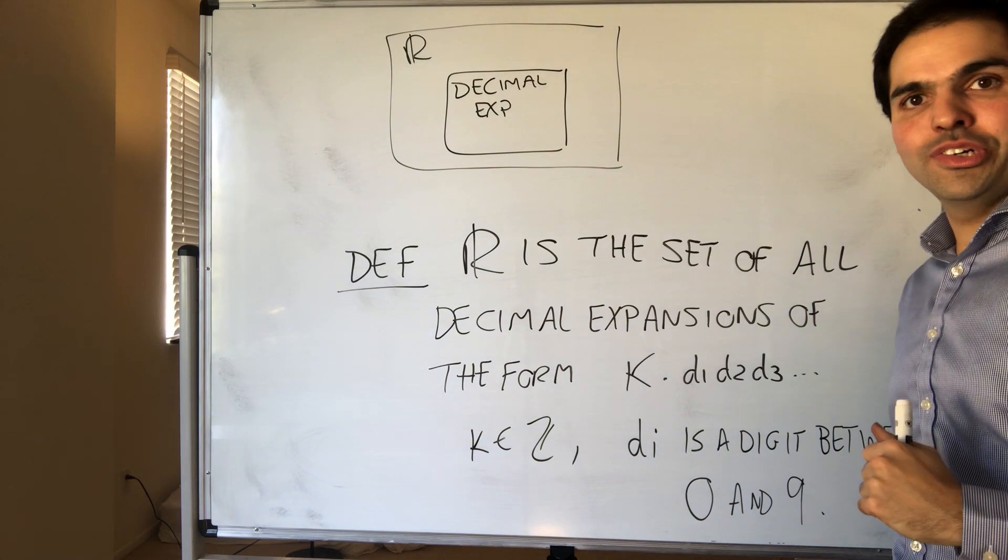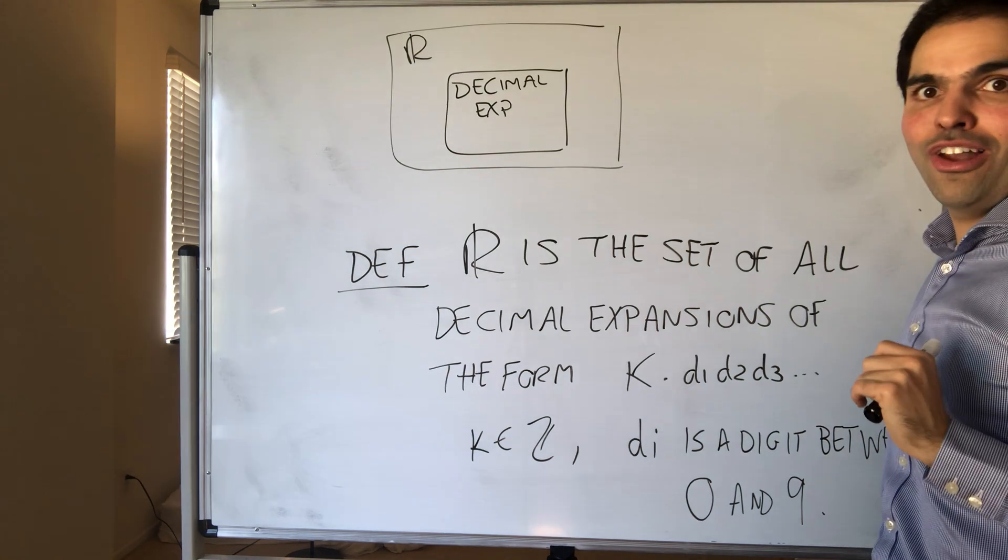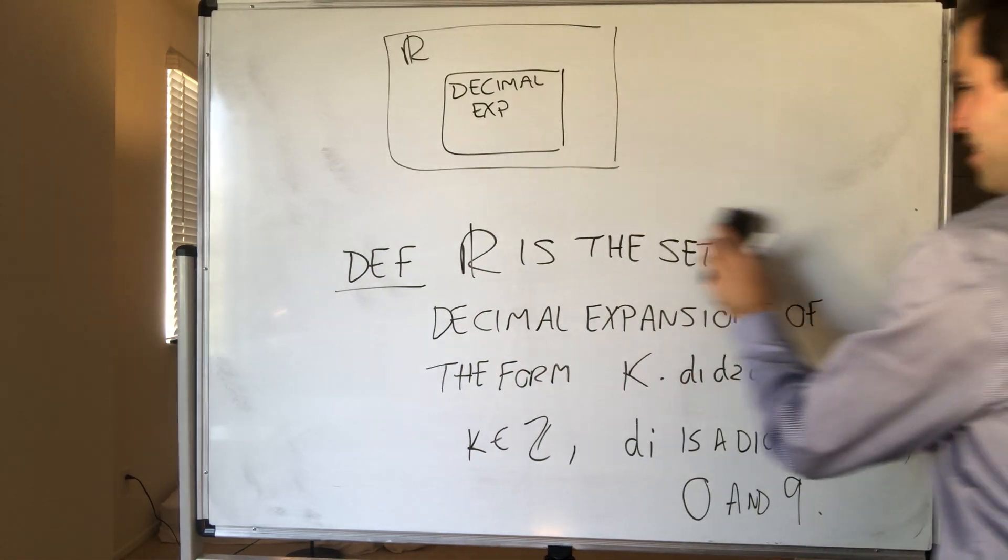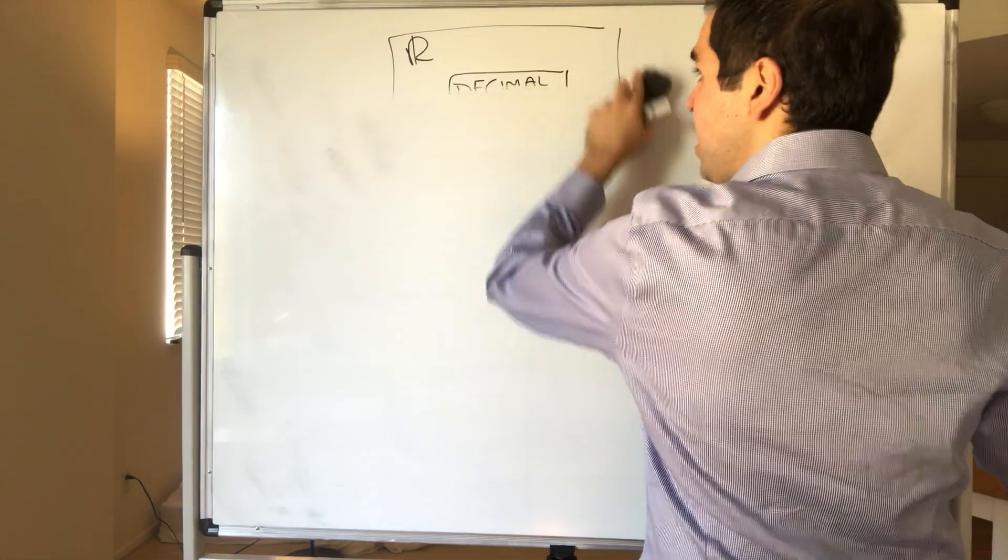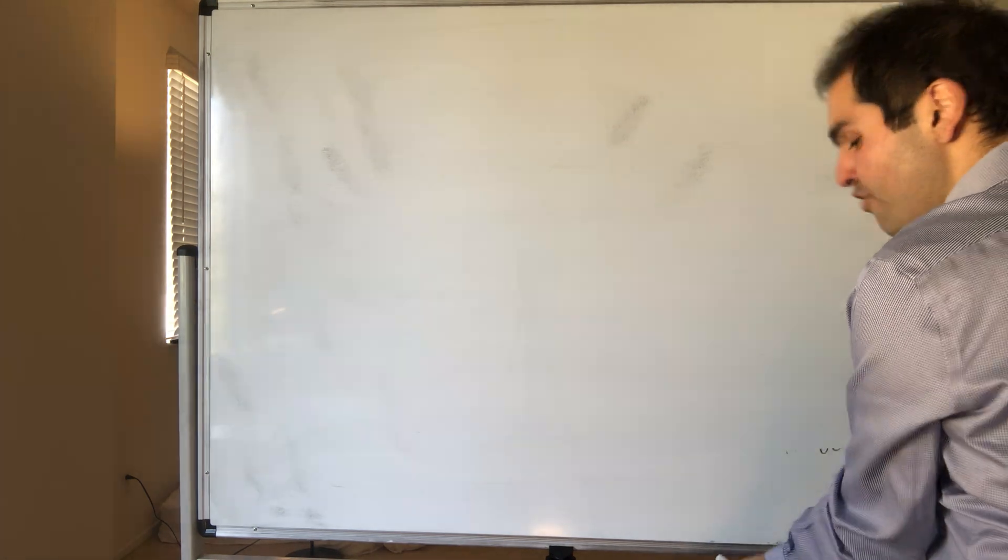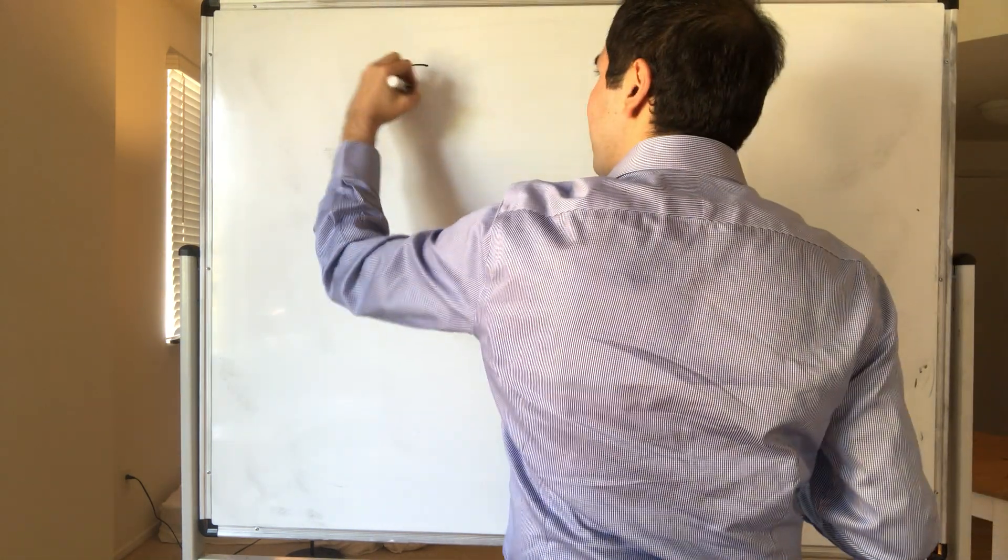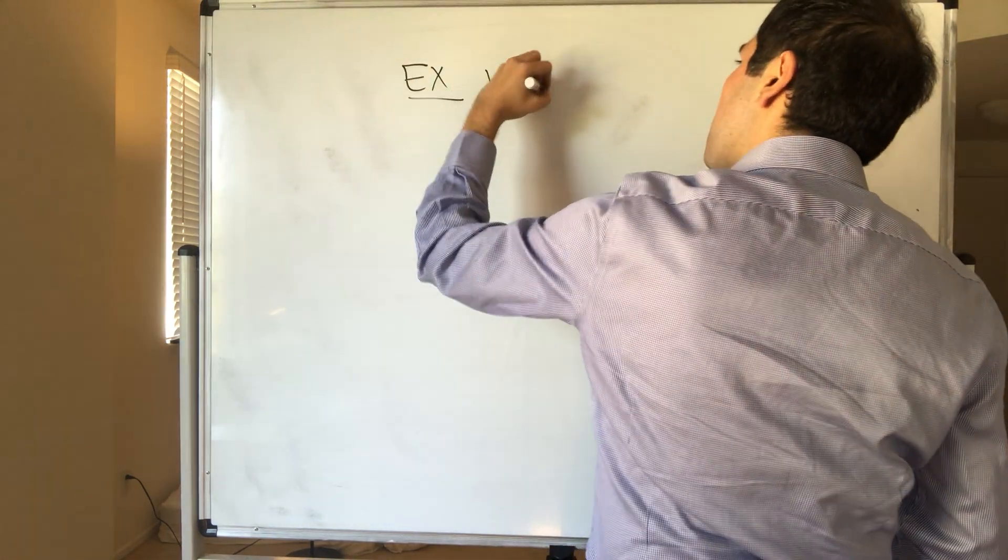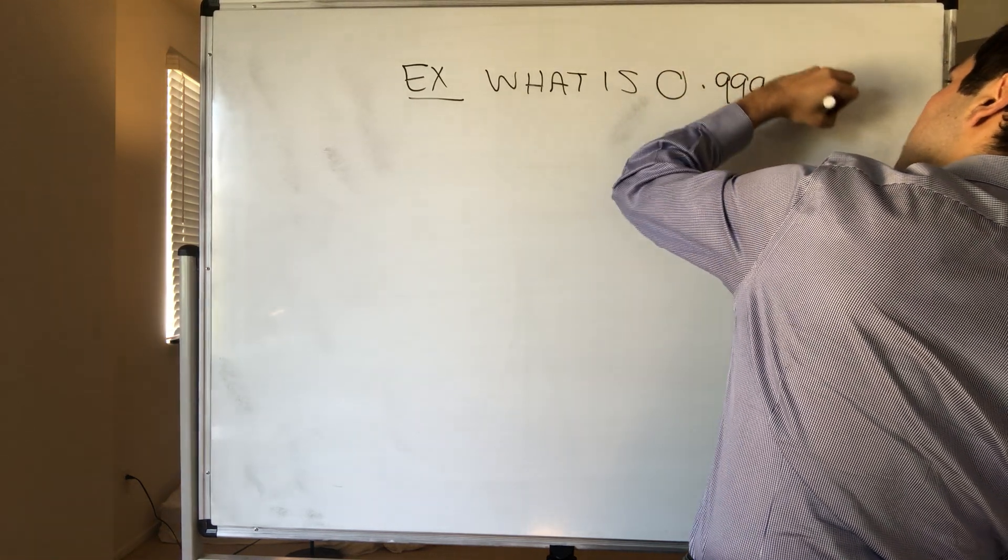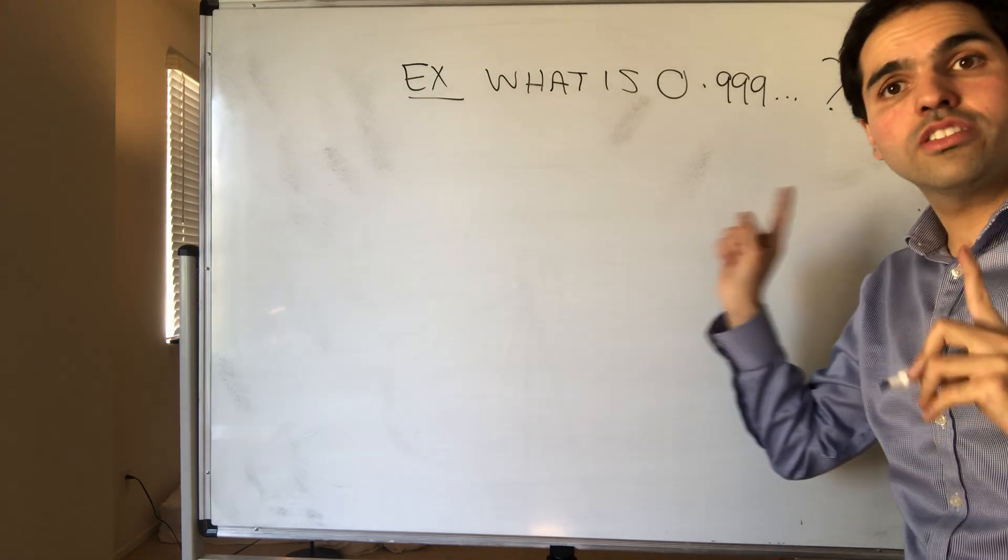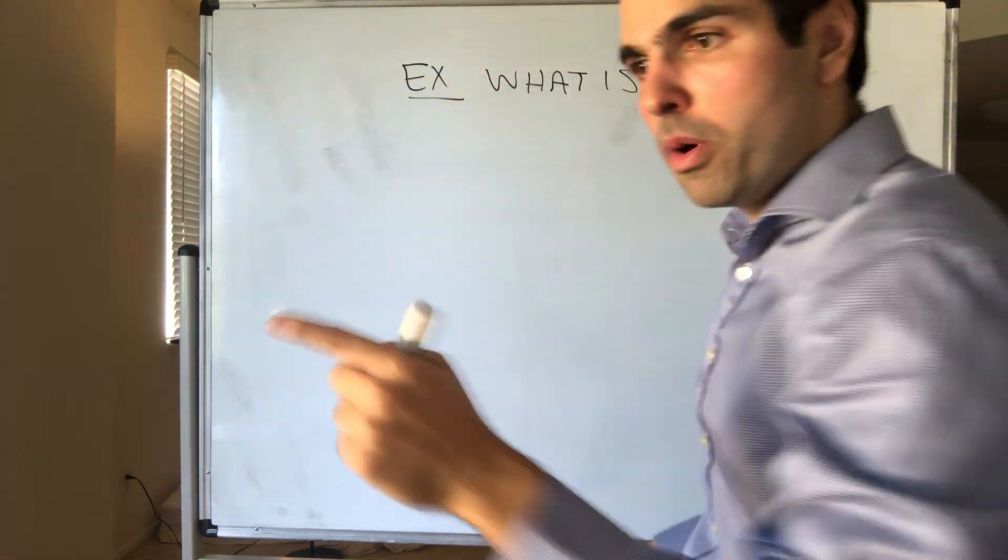And not only that, there is another issue, because it turns out, not only is this definition bad, it's also flawed. Because, let me illustrate the following scenario. What you would like, in theory, is that two different decimal expansions should give you two different numbers. But, look at the following.